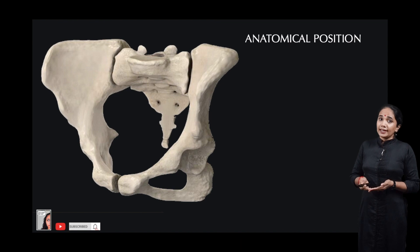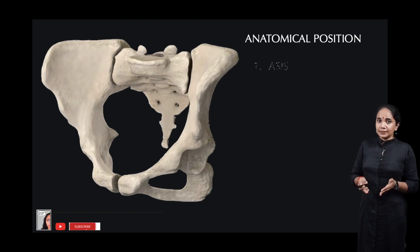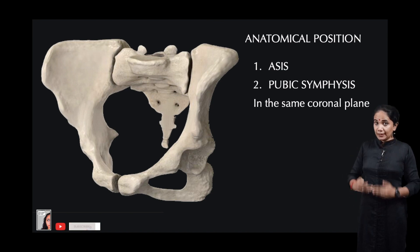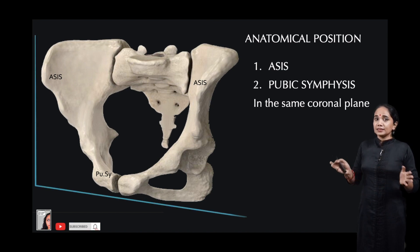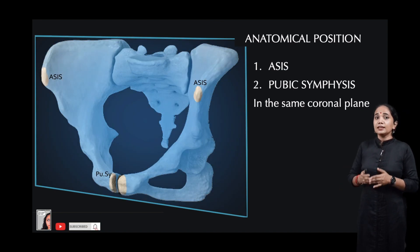To hold it in the anatomical position, what we have to remember is that the anterior superior iliac spine and the pubic symphysis have to come in the same coronal plane. Let's draw that and label it: you have the anterior superior iliac spine and the pubic symphysis, and let's place the coronal plane — that is how it should look.